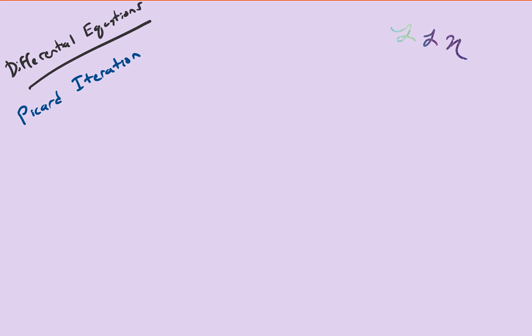In this video we're going to talk about a method that allows us to generate the solution to a differential equation without actually looking for the solution directly. That method is called the Picard iteration method. This method is used to prove the existence and uniqueness theorem for differential equations, but we're going to illustrate how the method works, which will give us some intuition on how that theorem is broken down.